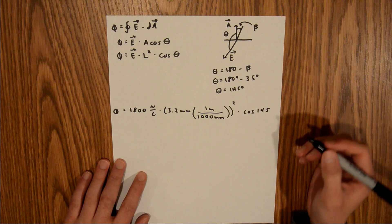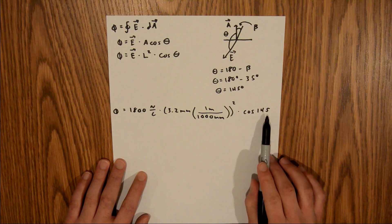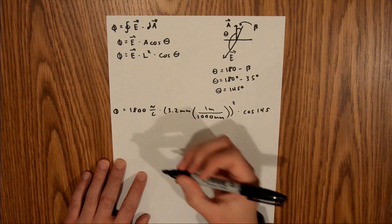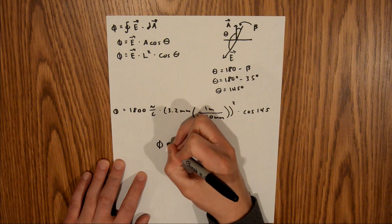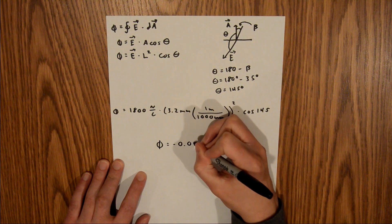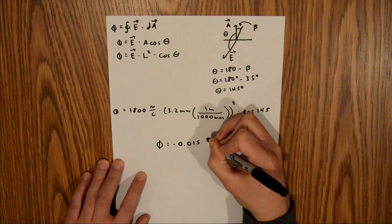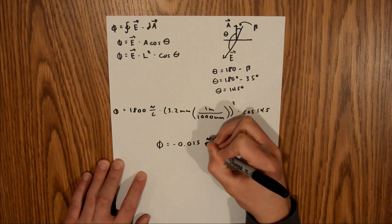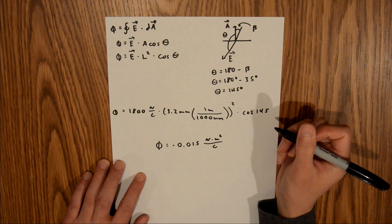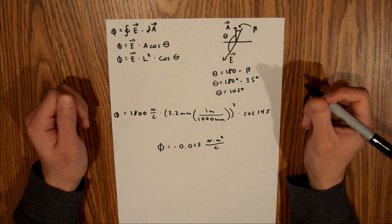When you plug all of that into your calculator, ensure that your calculator is in degree mode and not radian mode. If you do that, your flux should equal negative 0.015 newton times meters squared per coulomb. That is your final answer to this problem.